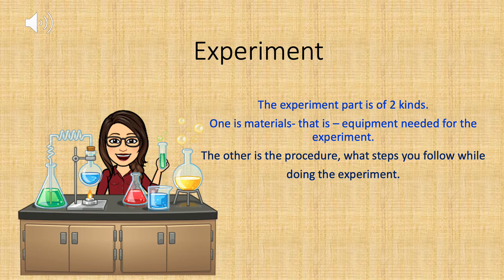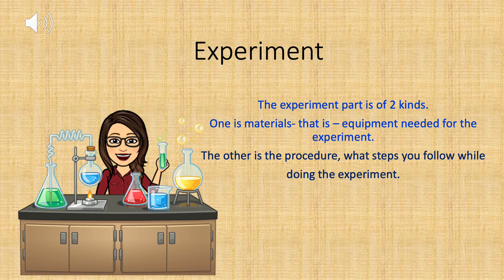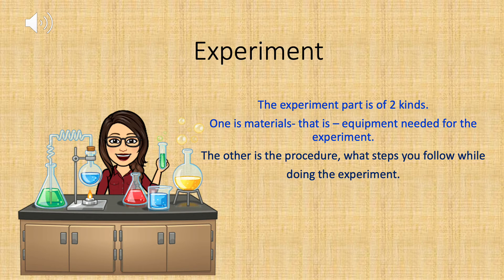The next step is Experiment, which is divided into two kinds: one is the Material and the other is the Procedure. Material is all about the equipment you use for the experiment, and these equipments vary according to the needs of the experiment. You can see how many materials she is using for her experiment. The next is the Procedure — that is, what steps you follow while doing the experiment.